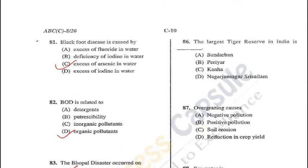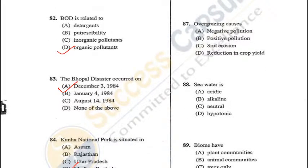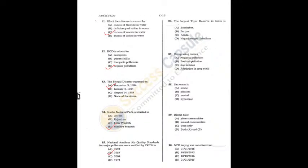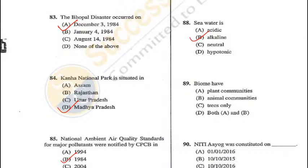Question 87: Overgrazing causes soil erosion — C is the correct answer. Question 88: Sea water is slightly alkaline — B is the correct answer. Q86 = D, Q87 = C, Q88 = B. Question 89: Biomes have both plant and animal communities. A biome is a community on a global scale defined by temperature, precipitation, type of plants, and animals — D (both A and B) is the correct answer.